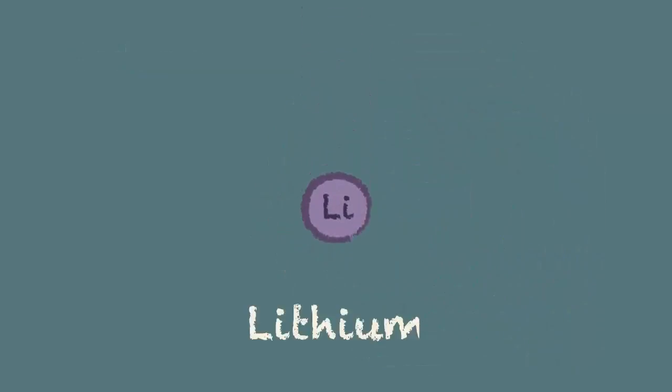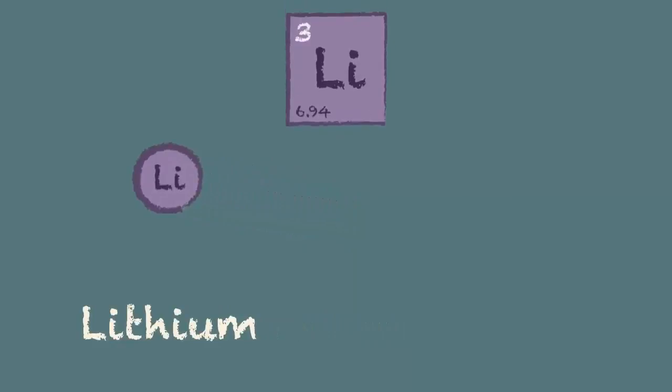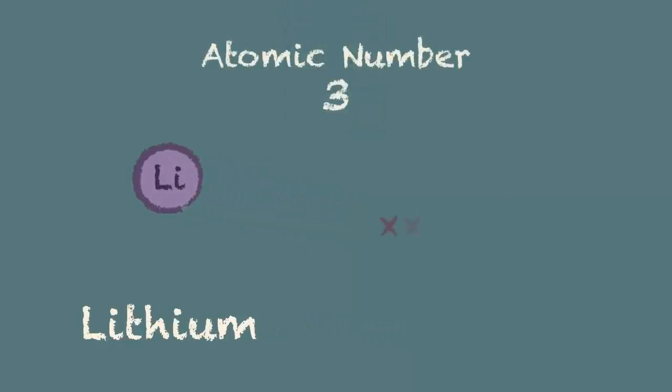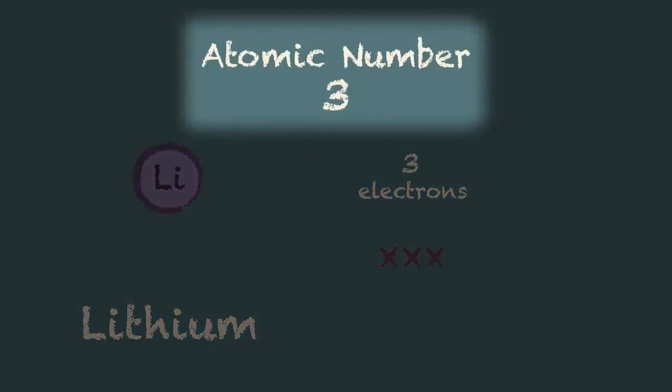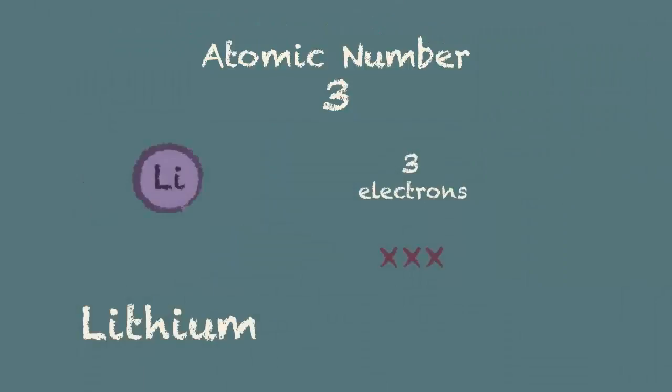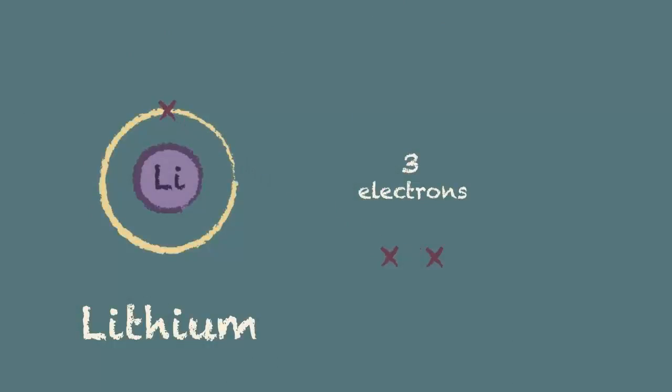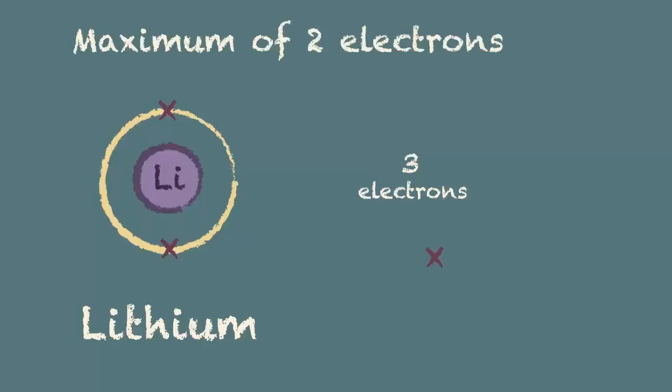We'll take a lithium atom as an example. With an atomic number of three it must have three electrons to balance the positive charge of the three protons in the nucleus. It's worth remembering that the atomic number tells you the total number of electrons in a neutral atom. So we put the first electron into the first shell, and the second. However, this shell can only contain a maximum of two electrons. That's one of the rules that you need to remember.